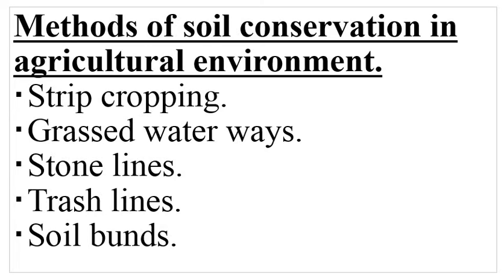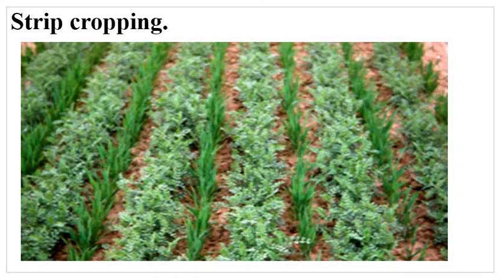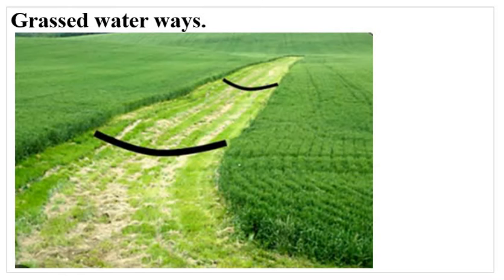Now let's go through them as per the notes. Strip cropping: you can see crops are planted in strips across the hill or around the contours. It is the growing of crops in a way that crops with little soil cover, for example maize, are grown while alternating in strips with those that have good ground cover, for example sweet potatoes. Grass can also be used as strips. The function of the strips is to prevent loss of soil through surface runoff.